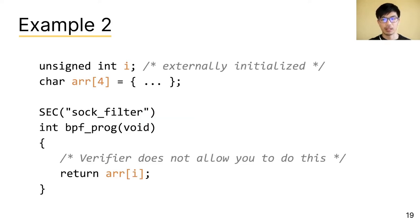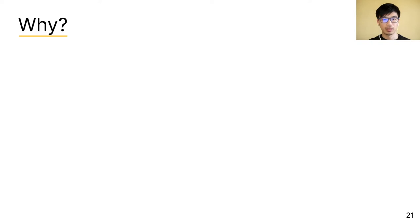Here we are accessing an array, arr, using an unsigned integer i as the offset. The verifier will actually reject this program. And this usually catches newcomers off guard.